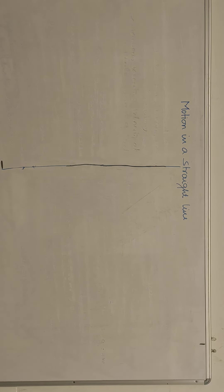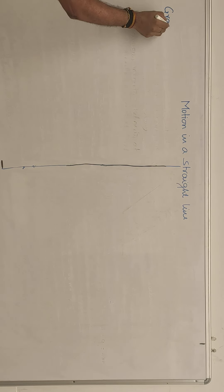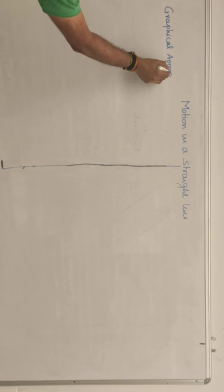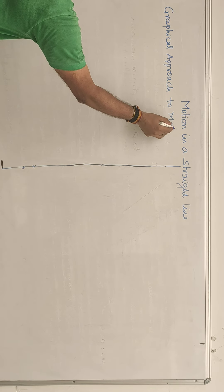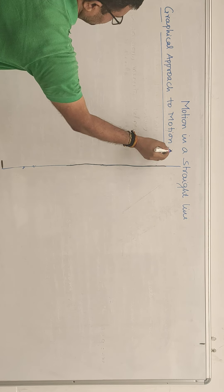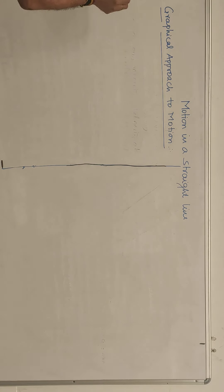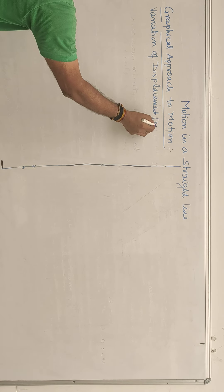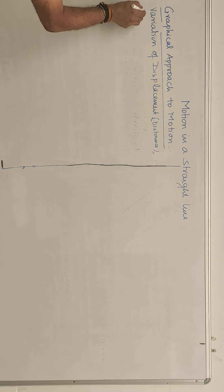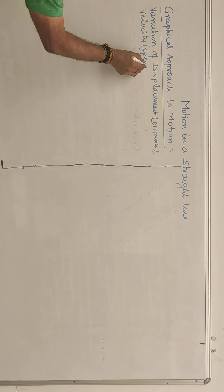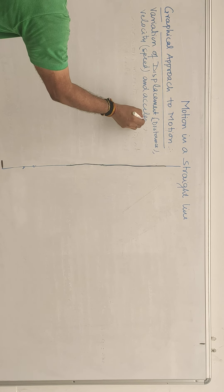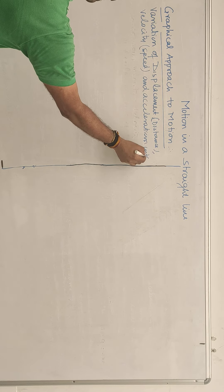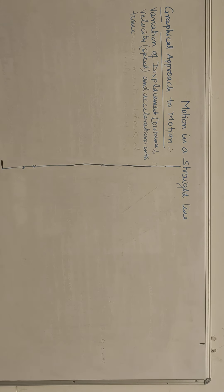Now we will discuss Graphical Approach to Motion — you have all studied this in class 9. In the Graphical Approach to Motion, we have to consider variation of displacement, velocity, and acceleration with time. We need to understand how velocity, displacement, and acceleration vary with time.